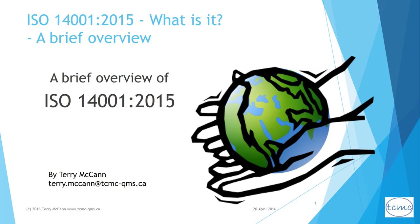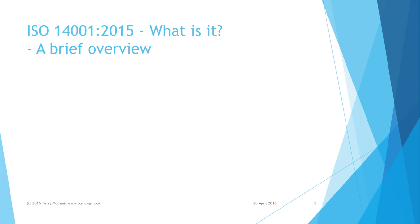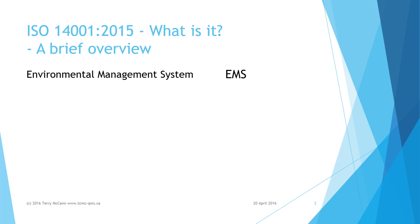What is ISO 14001? I'm Terry McCann. In a nutshell, ISO 14001 specifies the requirements for any organization — and I stress any organization — to be able to claim that they have an environmental management system, or EMS, that conforms to specifications set by the globally recognized International Organization for Standards, or ISO.